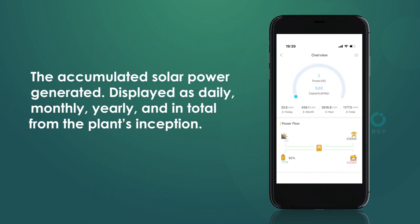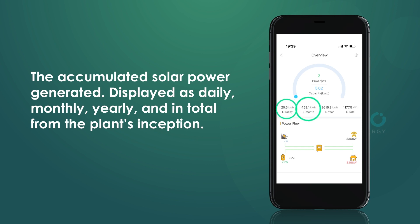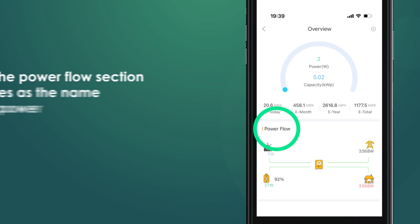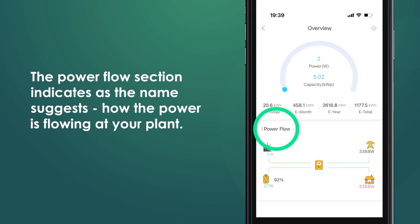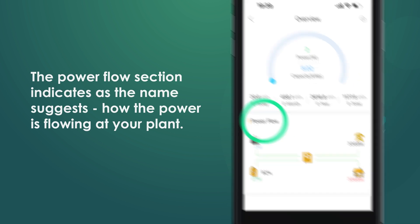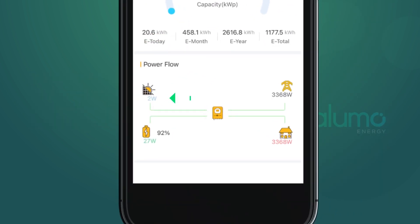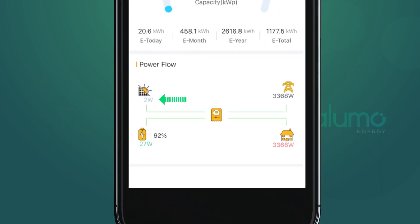Don't worry if it's not 100% correct — it can be updated in the Edit Plant section. These fields indicate the accumulated solar power generated, displayed as daily, monthly, yearly, and in total from the plant's inception.